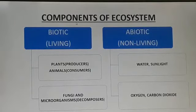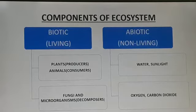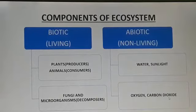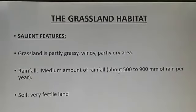Now we will see what are the components of ecosystem. There are two components. The first one is the biotic component, which are the living components — producers, consumers and decomposers fall in this category. Then comes the abiotic components, which are the non-living components. Water, sunlight, oxygen and carbon dioxide are present in the abiotic components.